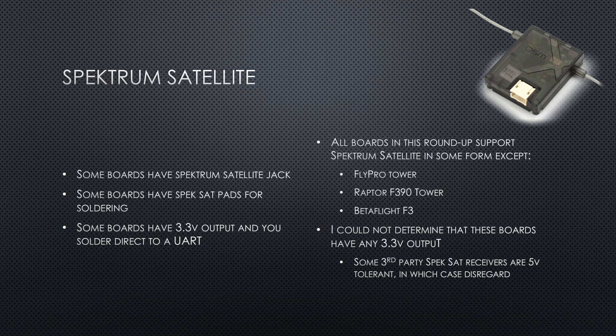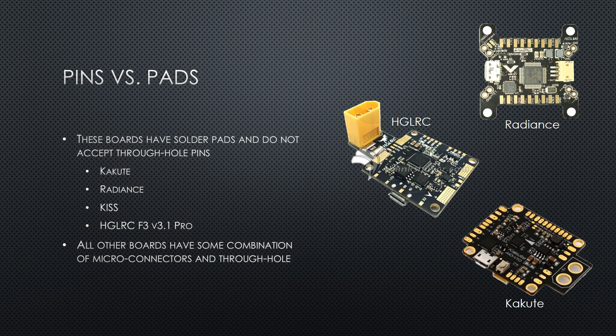What about pins versus pads? If you like to direct solder, you might prefer a board with nice pads instead of through holes. Four boards in the roundup have these pads: the Kakute, the Radiance, the KISS, and the HDLRC F3V 3.1 Pro. All the other boards have some combination of micro connectors and through holes.